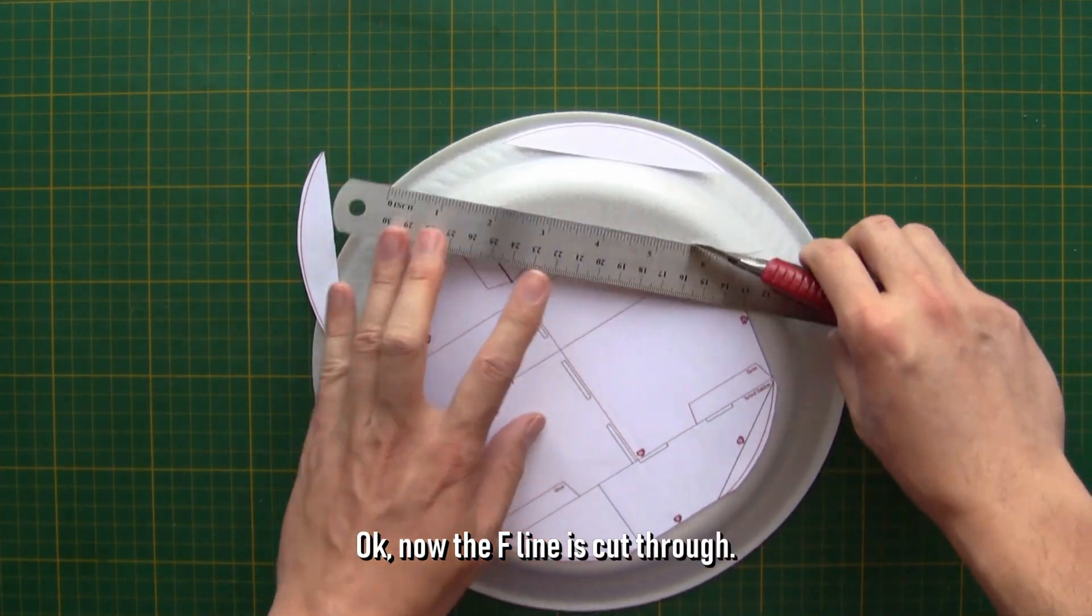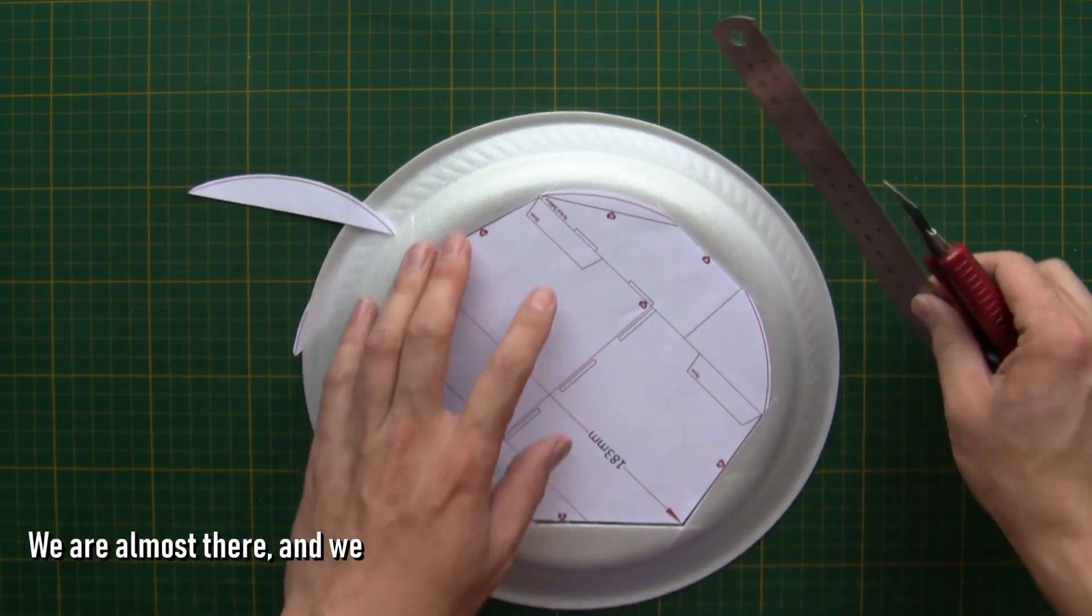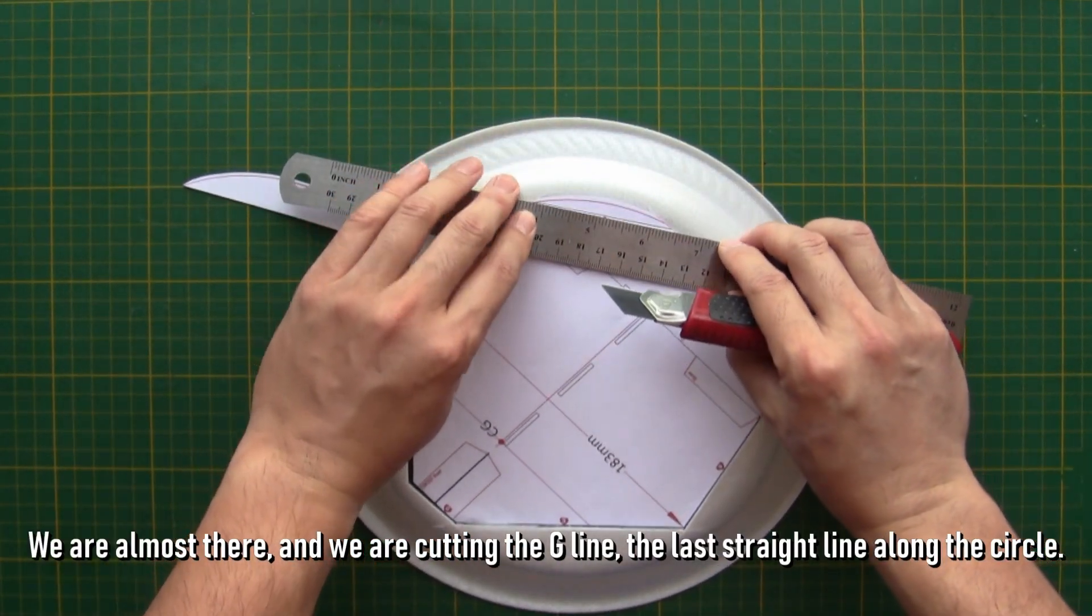Okay, now the F line is cut through. We are almost there. And we are cutting the G line, the last straight line along the circle.